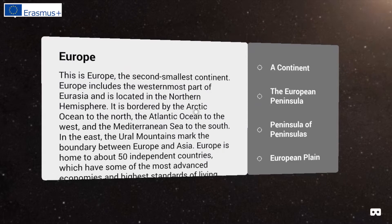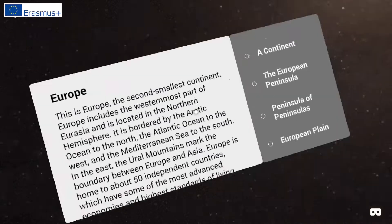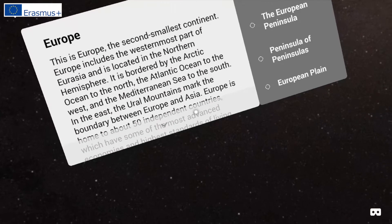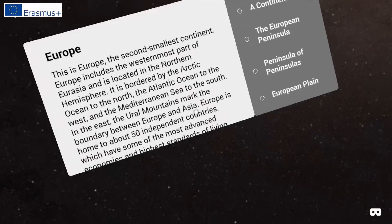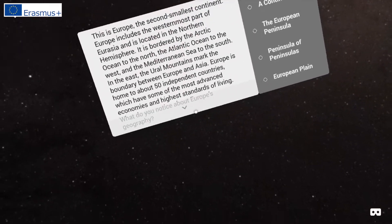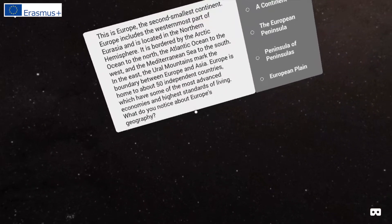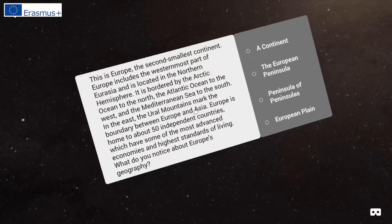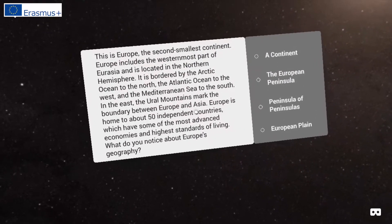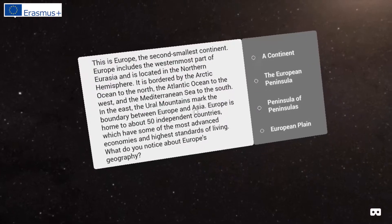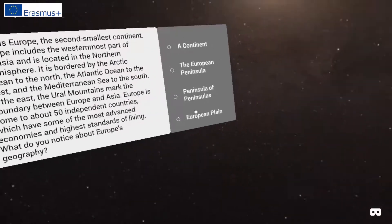In the east, the Ural Mountains mark the boundary between Europe and Asia. Europe is home to about 50 independent countries, which have some of the most advanced economies and highest standards of living.